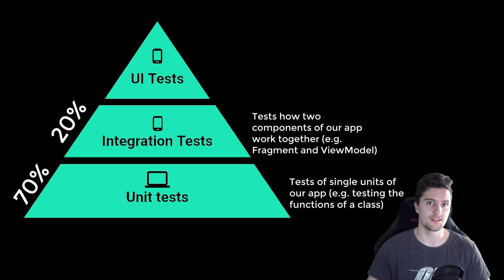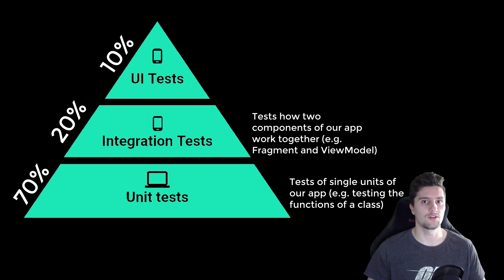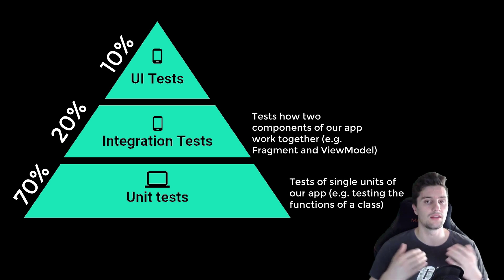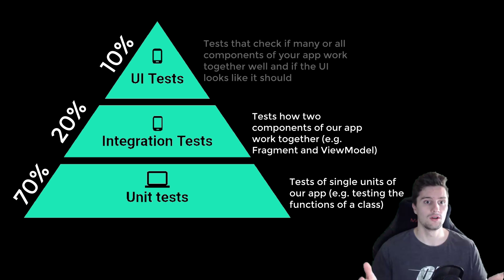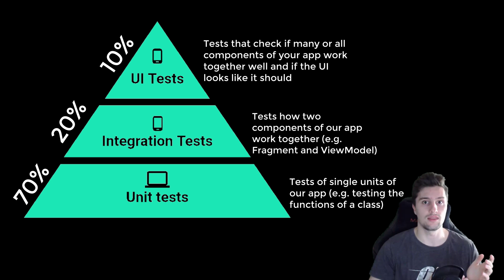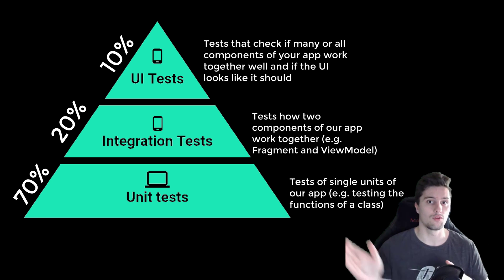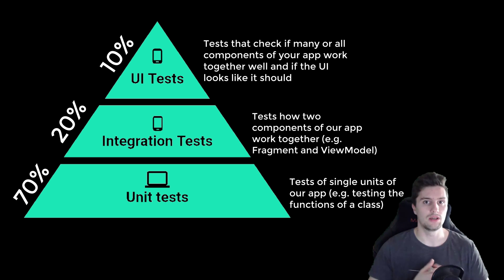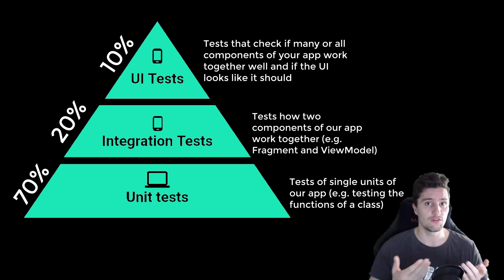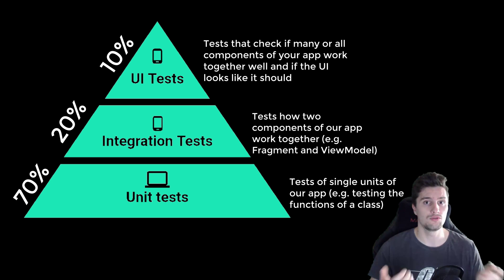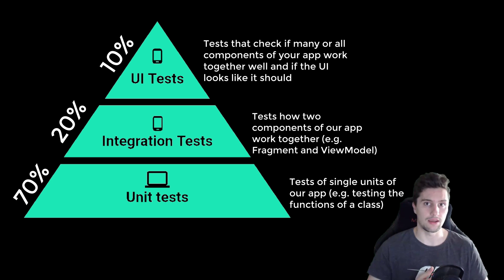Integration tests should make up about 20% of your test cases, and the remaining 10% goes to UI tests, also called end-to-end tests. These are large tests that guide a user through your whole app — for example, logging in, navigating to the main fragment, and adding a to-do item. UI tests verify that the UI has a specific state we expect, such as whether a checkbox is checked, a RecyclerView contains an item, or a TextView has specific text. Since they test the UI, these tests must always run on the Android emulator.